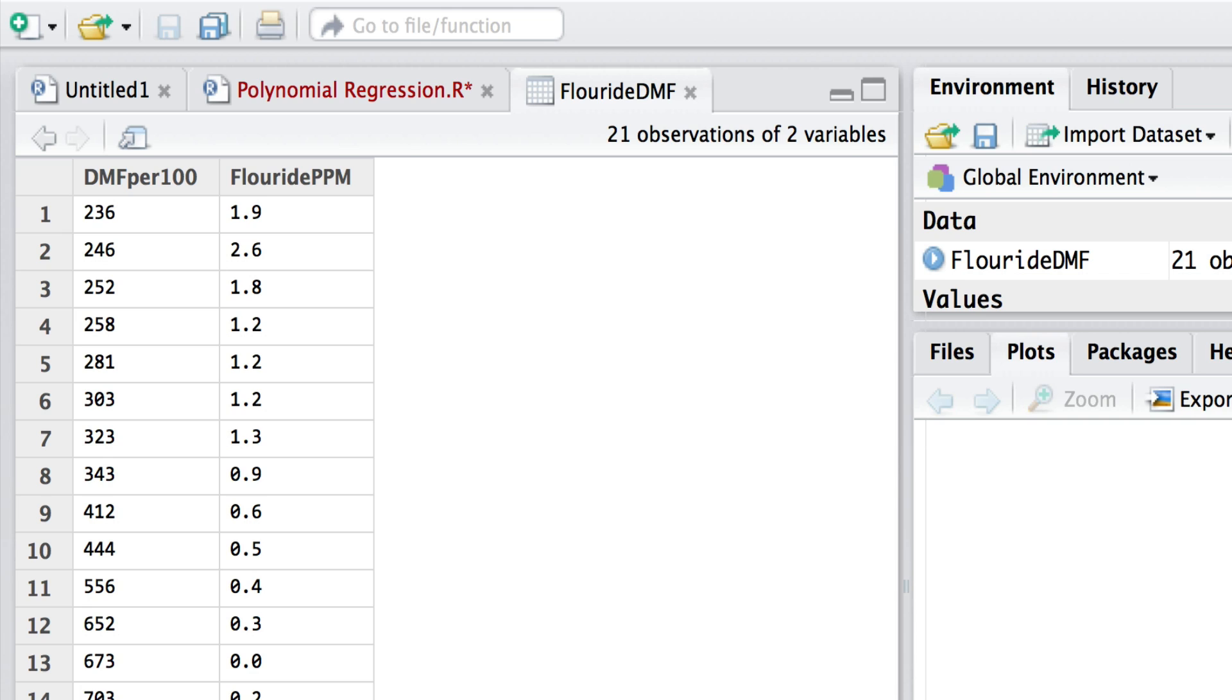These data derive from a study by Jones and colleagues in the British Medical Journal, and their work was concerned with decayed, missing, and filled teeth in children and how that might relate to the fluoride concentration in the water that the children were drinking.